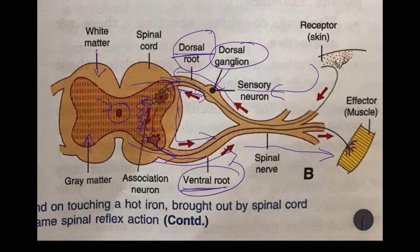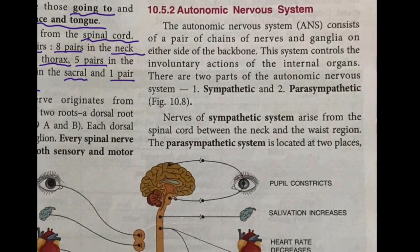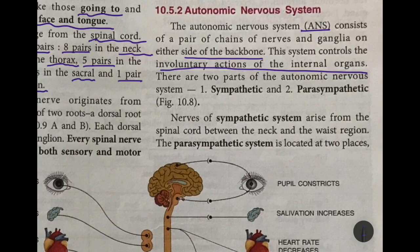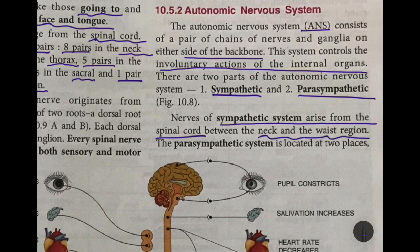Next we move on to the autonomic nervous system, also abbreviated as ANS. It consists of a pair of chains of nerves and ganglia on either side of the backbone. This system controls the involuntary actions of the internal organs. There are two parts: the sympathetic and the parasympathetic. The nerves of the sympathetic system come from the spinal cord between the neck and waist region only, but the parasympathetic system is located in two places — the head and neck, and the sacral region.